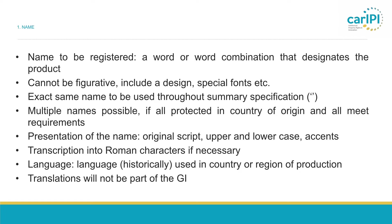The name should be presented as it is used in the market, in its original script, including all accents or upper and lower case where applicable. Should the name not be in Roman characters, the European Commission would also need a transcription. The language used for the name should be a language used, or at least historically used, in the country or region of protection. Please also note that translations will not be part of the GI — an English translation of the name would not be covered by the GI protection, unless it is a language used in the country of protection.